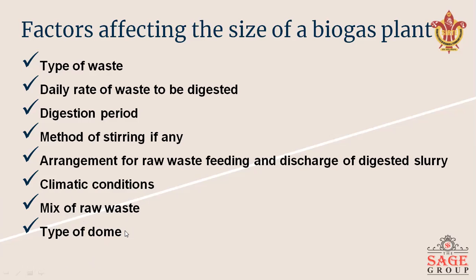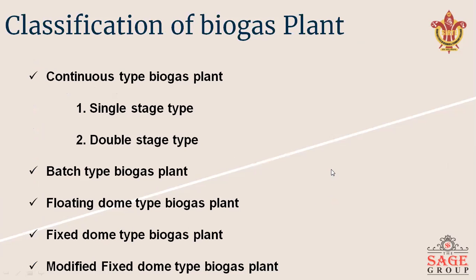The classification of biogas plants includes: continuous type biogas plant, which is further divided into single-stage and whole-stage biogas plant; batch type biogas plant; floating dome type biogas plant; fixed dome type biogas plant; and modified fixed dome type biogas plant. In the next lecture, we will discuss all these biogas plants one by one with the help of diagrams.